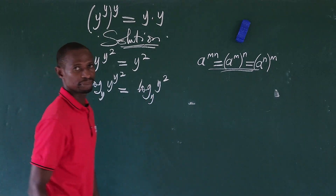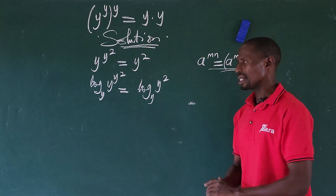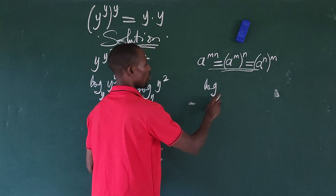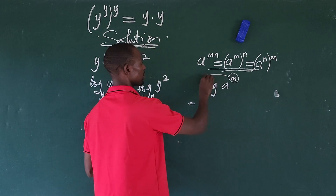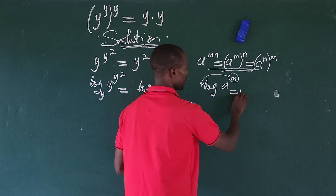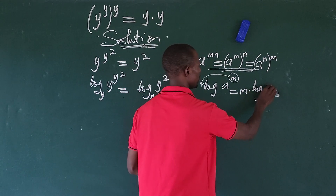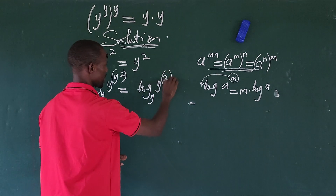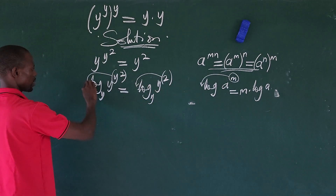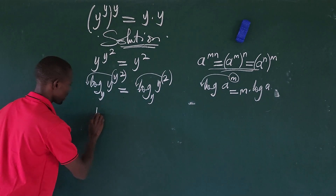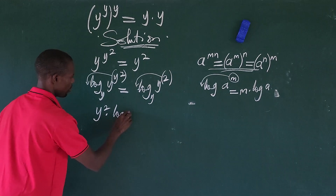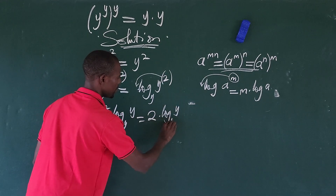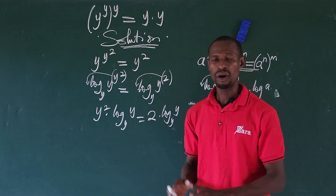Now we make use of a property of logarithms: log of a to the power of m equals m times log a. We move the exponents to the front. The whole of y squared is an exponent on the left, and 2 is the exponent on the right. So doing that gives us y² times log_y(y) equals 2 times log_y(y).